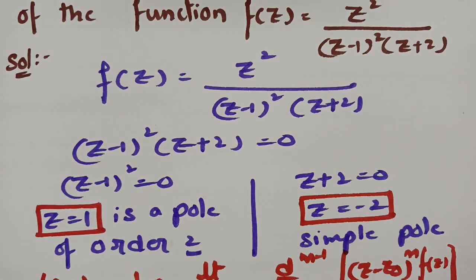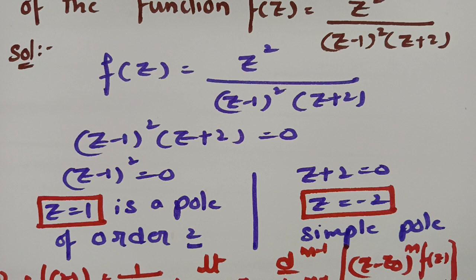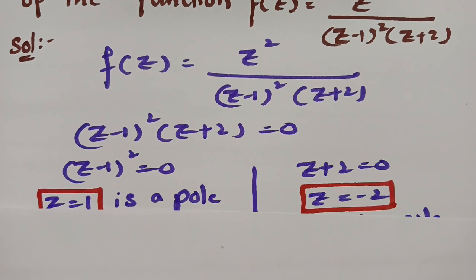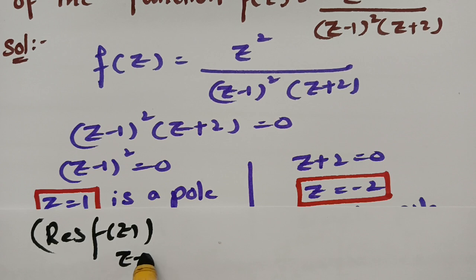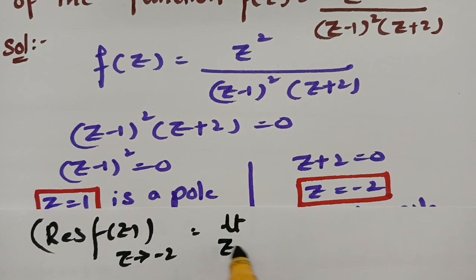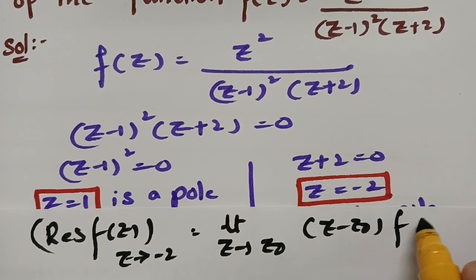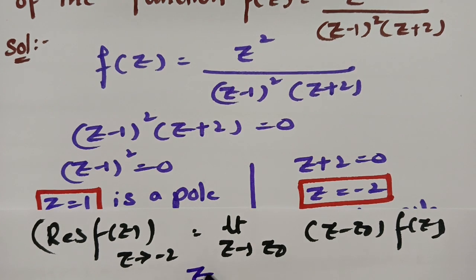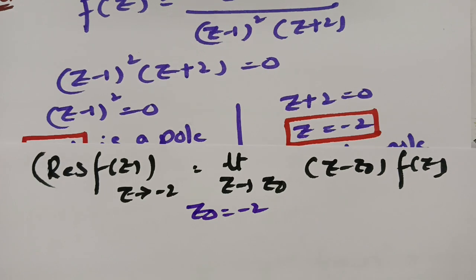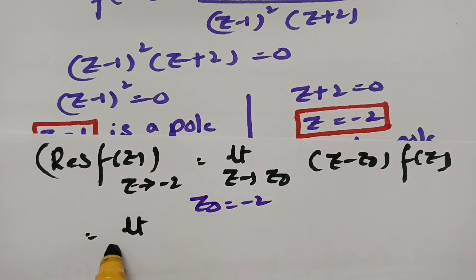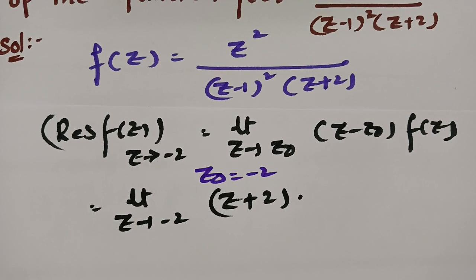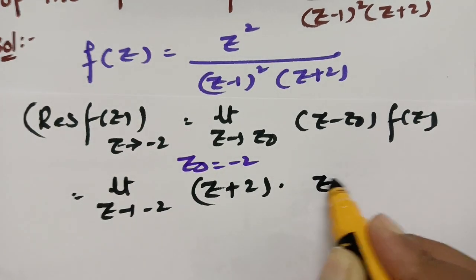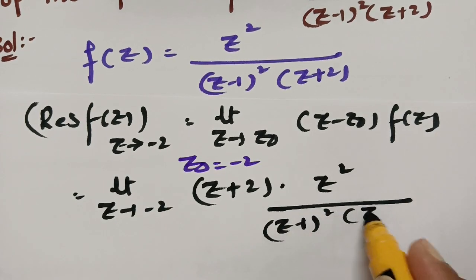Next, we have to find the residue at the pole z = −2. As it is a simple pole, the formula is very simple: Residue of f(z) at z = −2 = lim[z→−2] (z−z₀)·f(z) = lim[z→−2] (z+2) × z² / [(z−1)²(z+2)].